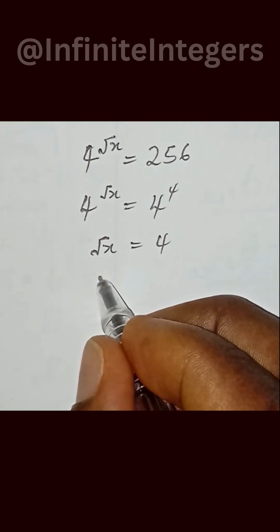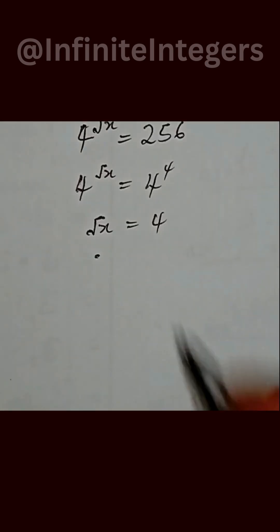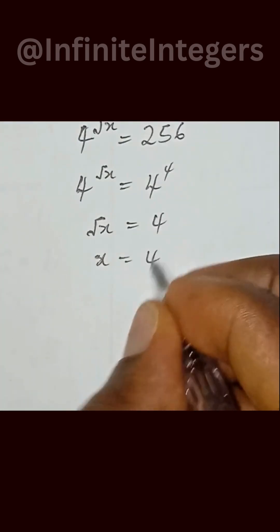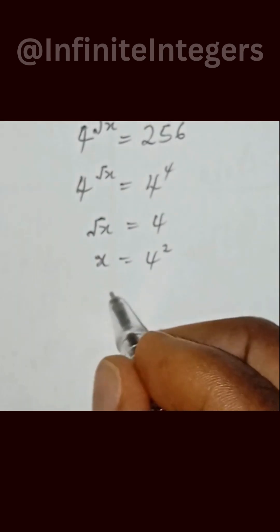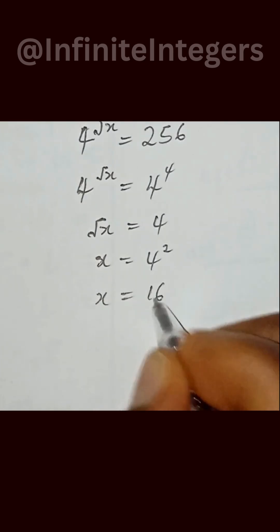Then this means if we square both sides, we have x equal to 4 squared and x will be equal to 16.